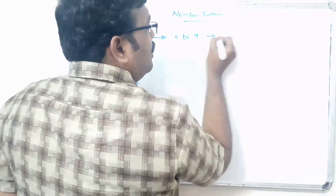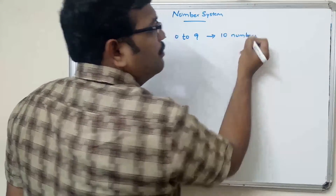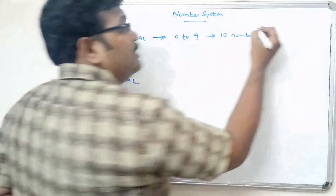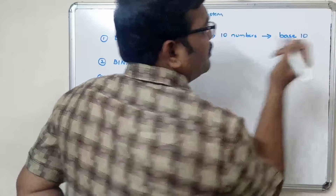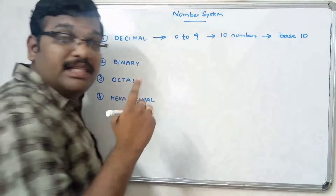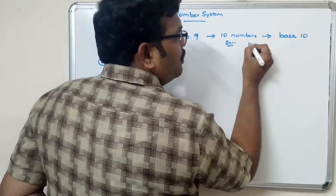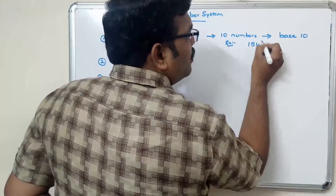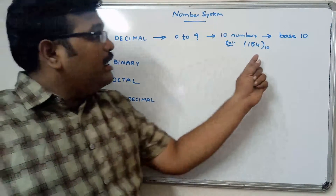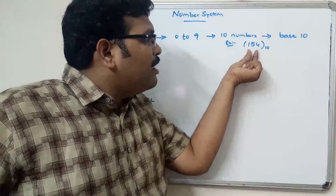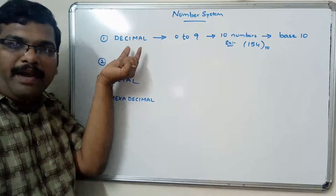Coming to decimal — any number is represented in between 0 to 9, so there are total ten numbers. That's why it is represented with base 10. For example, 154 base 10 indicates this is a number represented in decimal format.